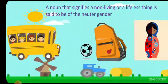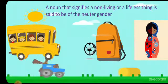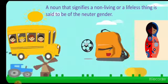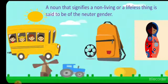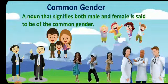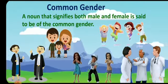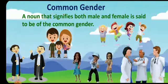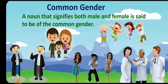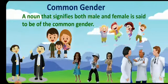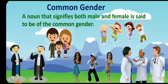Neuter gender: a noun that signifies a non-living or lifeless thing is said to be neuter gender — sun, bus, ball, bag, doll, tractor, windmill, all these are of neuter gender. Common gender: a noun that signifies both male and female is said to be the common gender. For example, lawyer — a lawyer may be male or female. The same way: parents, singers, children, doctors — all these can be male or female, so they are common gender.